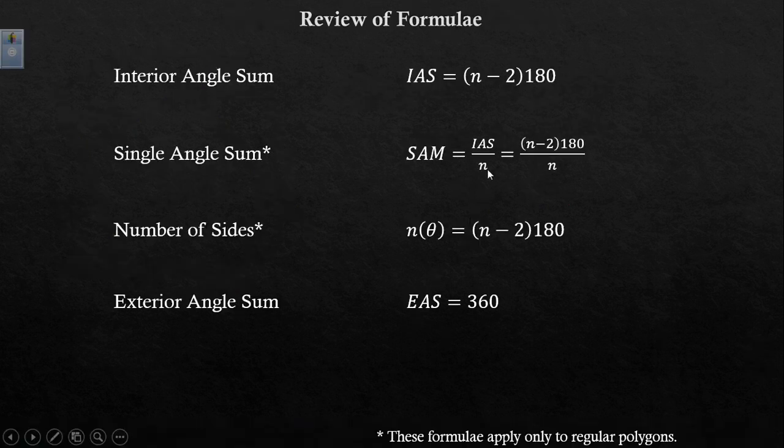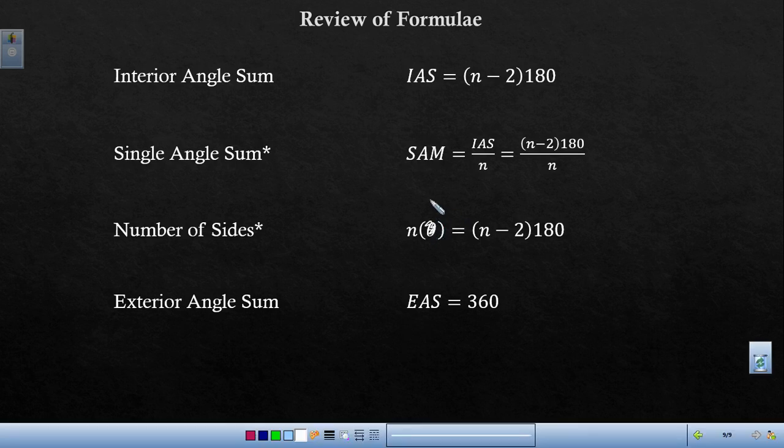In review we have the interior angle sum formula which is n minus 2 times 180. The single angle sum for regular polygons which is the interior angle sum divided by the number of sides. The number of sides which is n times this theta should probably be SAM. That's confusing. That's SAM. Equals n minus 2 times 180. Remember that's IAS. So n times SAM equals IAS. And EAS for everything is 360 degrees.